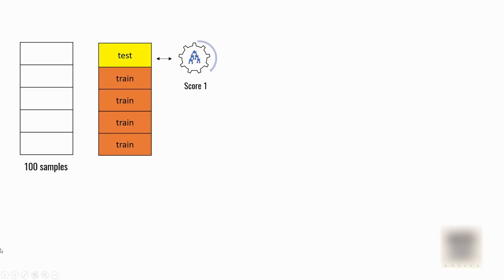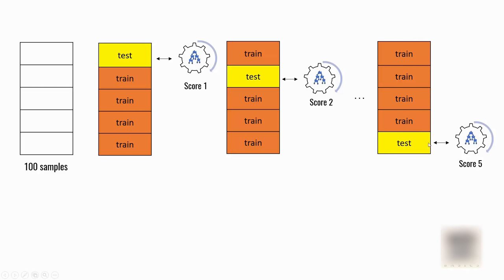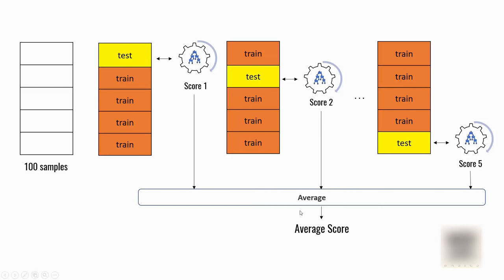In K-Fold cross-validation, we divide our 100 samples into folds. I have five folds here, each containing 20 samples, and then you run multiple iterations. In the first iteration you use folds 2 through 5 for training and fold 1 for testing, and note down the score. In the second iteration you use folds 1 and 3 through 5 for training and fold 2 for testing. You repeat the process until the last fold, then average all the scores. This technique is very good because you're giving a variety of samples to your models.